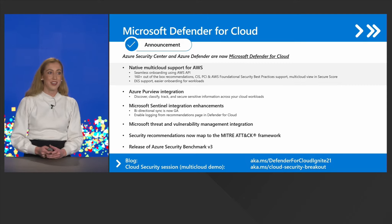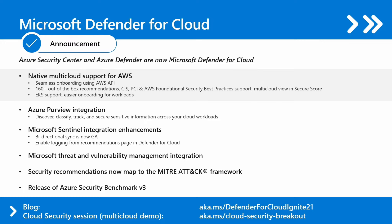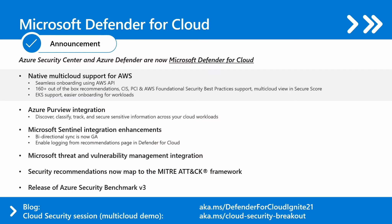Let's start with Microsoft Defender for Cloud. It is formally the combination of Azure Security Center and Azure Defender, and it's trying to address multi-cloud capabilities. This leads to the first announcement: native support for AWS. We have implemented an agentless onboarding approach leveraging the AWS API. We remove any dependency on AWS services such as the AWS Security Hub, and we're providing a single pane of glass to see security recommendations — not only for Azure but also for AWS — coming with more than 160 out-of-the-box recommendations.